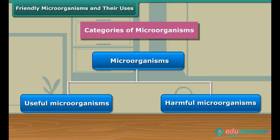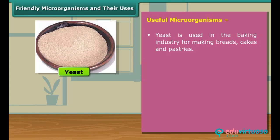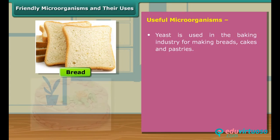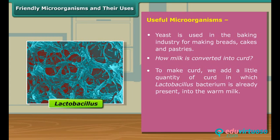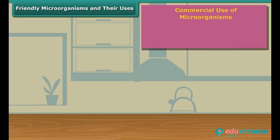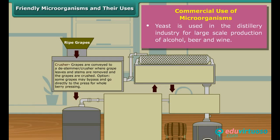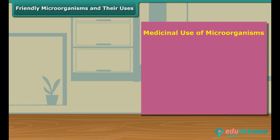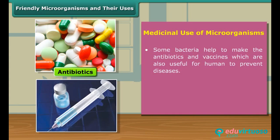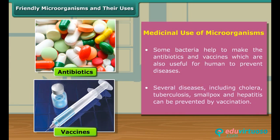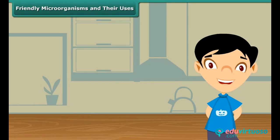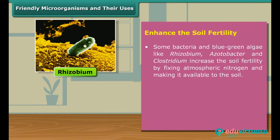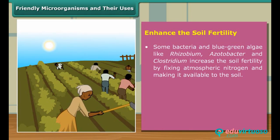Now we discuss the friendly activity of microorganisms in detail. One such friendly microorganism is yeast. Yeast is used in the baking industry and in our homes for making breads, cakes, and pastries. The bacterium Lactobacillus is useful to make curd from milk. Microorganisms are also useful in commercial and medicinal fields. For instance, yeast is used in the distillery industry for large-scale production of alcohol, beer, and wine. Some other bacteria are helpful in production of antibiotics and vaccines. Vaccination is helpful in several diseases including cholera, tuberculosis, smallpox, and hepatitis. Some bacteria and blue-green algae increase soil fertility through atmospheric nitrogen fixation.